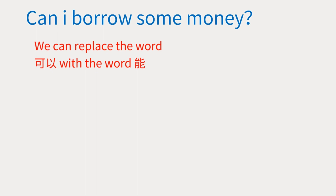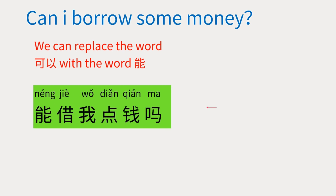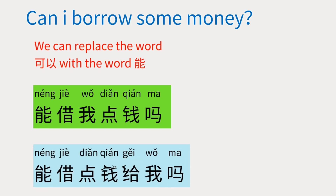We can also replace the word 可以 with the word 能。For example: 能借我点钱吗？能借点钱给我吗？